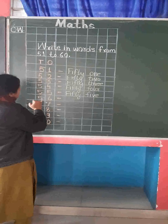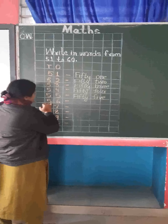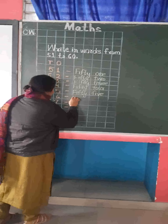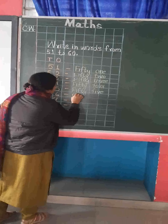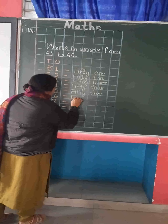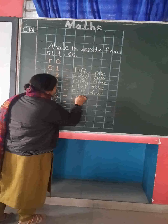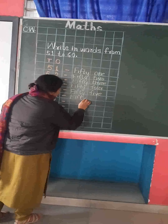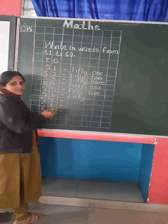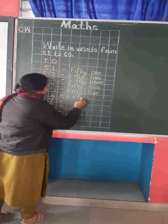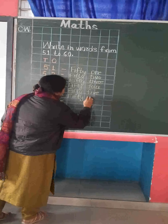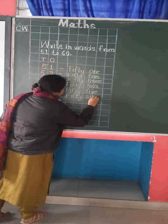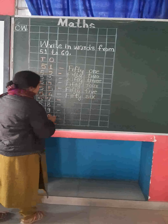Now here the next number is 56. So we will write similarly here: F, I, F, T, Y. 50. And what is the spelling of 6? F, I, F. 56.